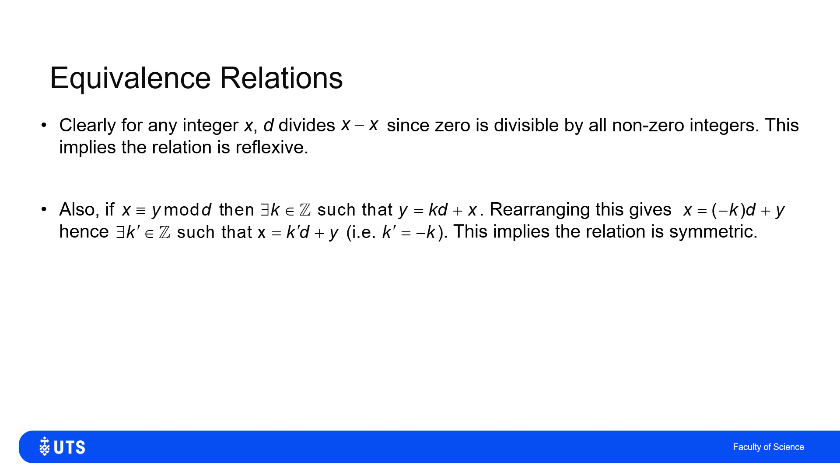All I need now is to show transitivity. Then if X is congruent to Y mod D and Y is congruent to Z mod D, then I know that X can be written as K1 multiples of D plus Y. And I know that Y can be written as K2 multiples of D plus Y for integers K1 and K2.